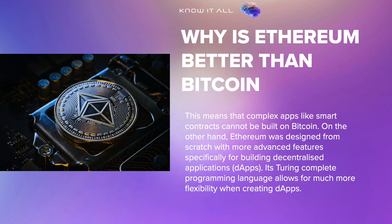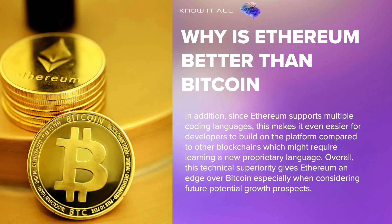On the other hand, Ethereum was designed from scratch with more advanced features specifically for building decentralized applications. Its Turing-complete programming language allows for much more flexibility when creating dApps. In addition, since Ethereum supports multiple coding languages, this makes it even easier for developers to build on the platform compared to other blockchains which might require learning a new proprietary language. Overall, this technical superiority gives Ethereum an edge over Bitcoin, especially when considering future potential growth prospects.